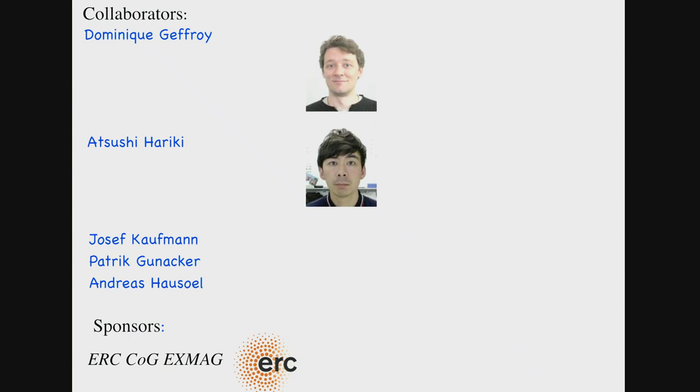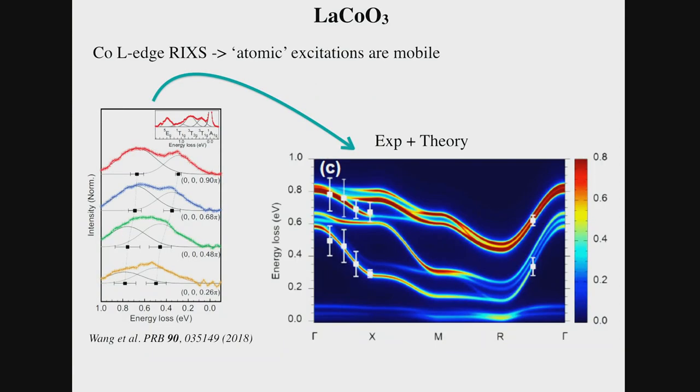My talk will be mostly about models, but let me start by motivating the work by looking at materials. The first material is lanthanum cobaltate. Excitonic magnetism is magnetism of materials where the atomic ground states are non-magnetic. What makes it interesting is that the excited states carry a magnetic moment, and if these atomic excited states are not very high in energy, it may lead to interesting effects.